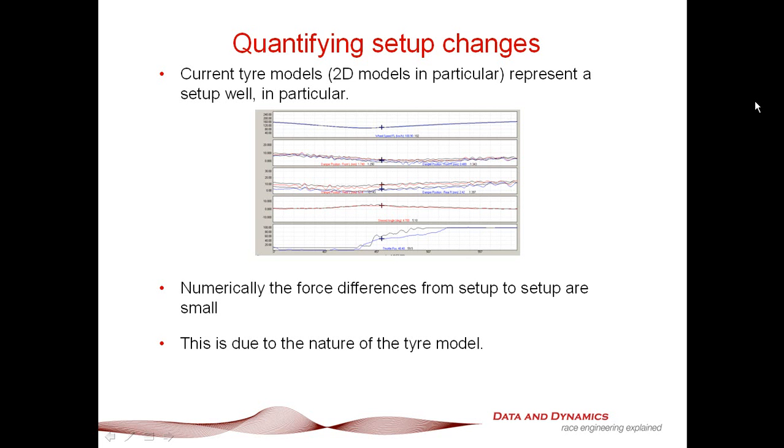They can also correlate steering and the throttle traces very well. When you do the numbers based on a simple 2D tire model, you'll see the differences setup to setup, the force differences are very small. The reason is due to the nature of the tire model. I've written a number of road scanner engineering articles about that, where I mathematically delve into that in greater detail. Let me give you a quick example.